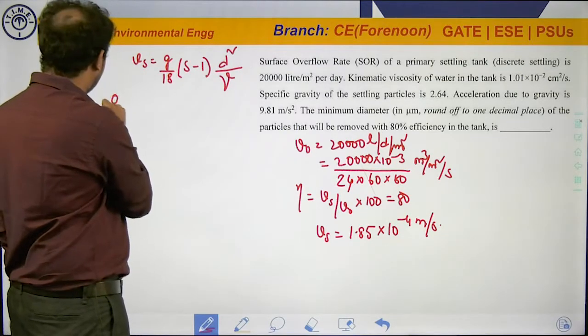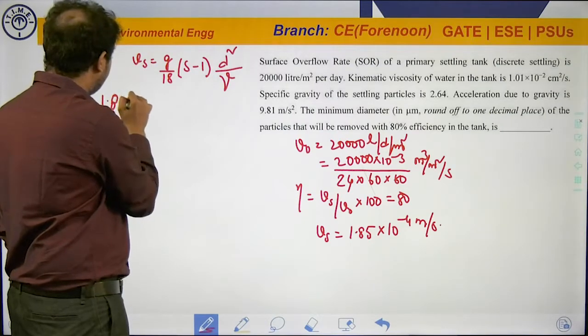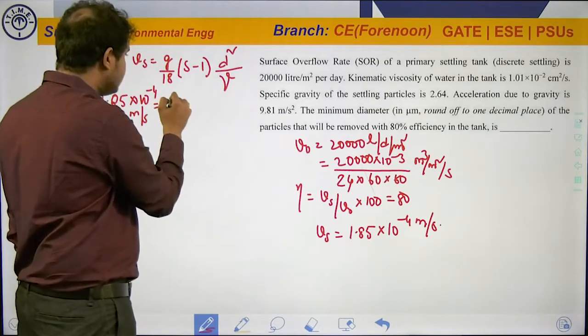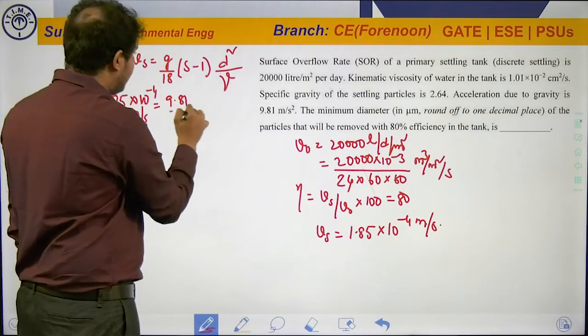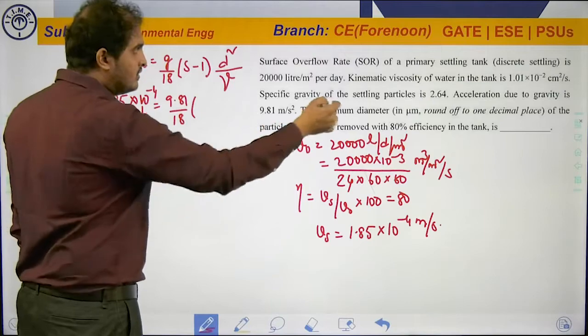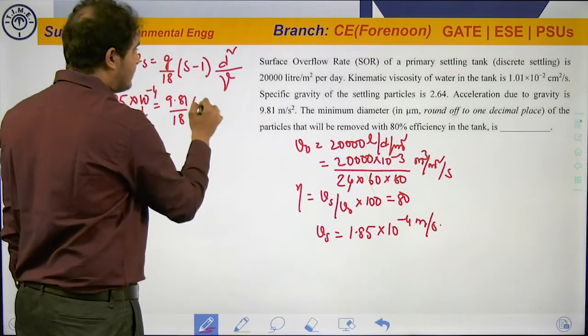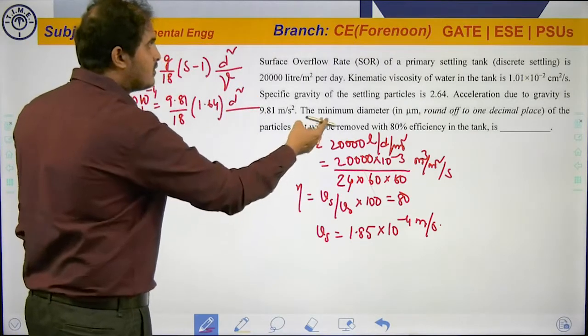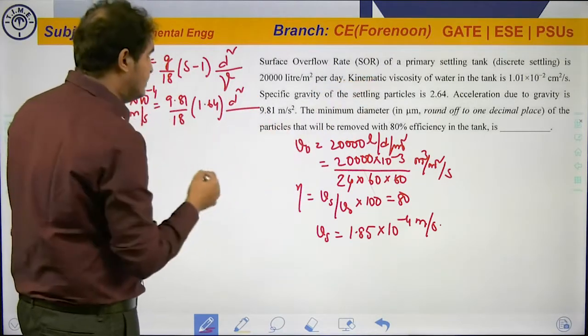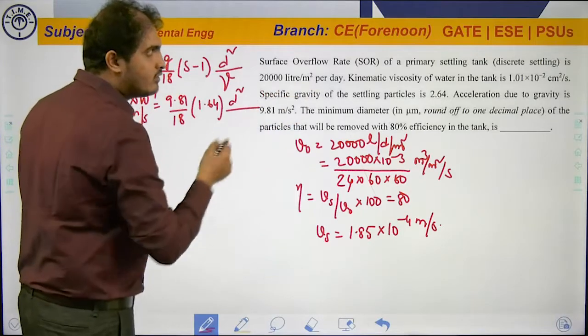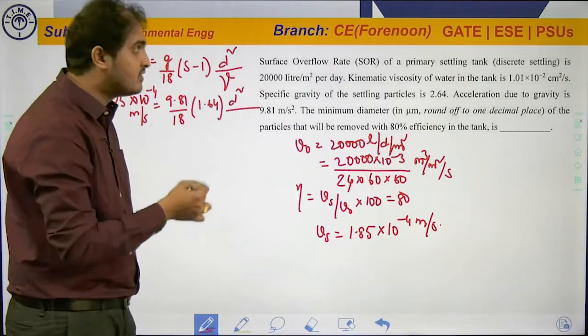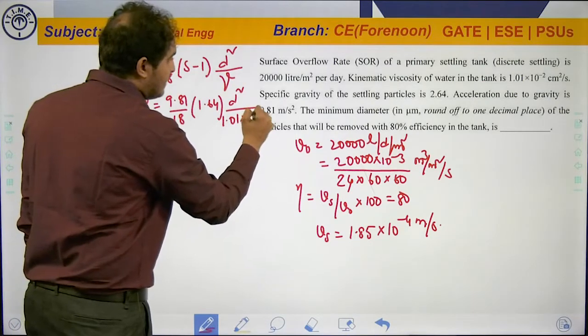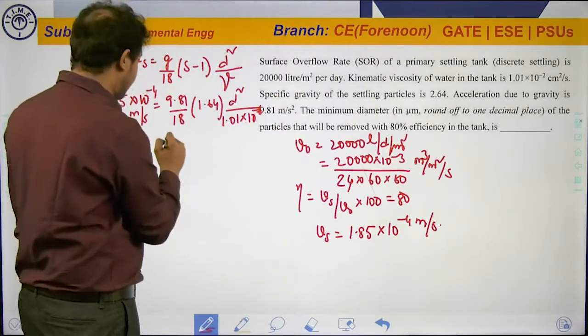Vs is equal to 1.85 × 10⁻⁴ meters per second. The kinematic viscosity value, which on conversion will be 1.01 × 10⁻⁶ meter square per second.